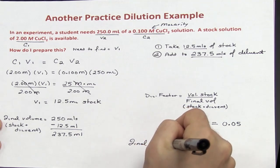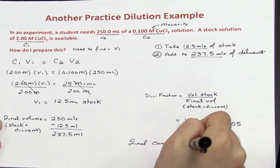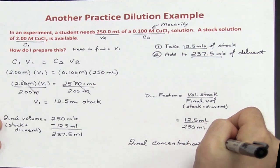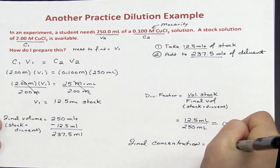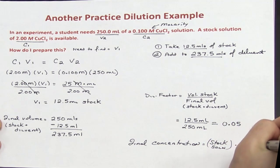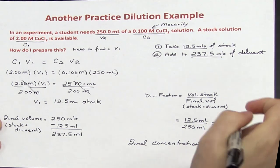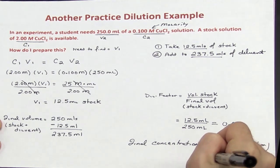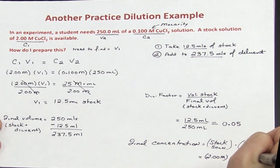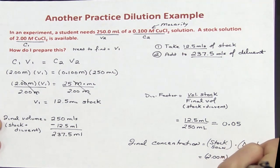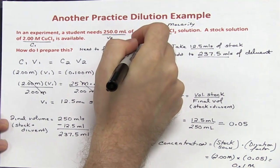To find the final concentration — just as we saw with serial dilutions — the final concentration equals the stock solution concentration multiplied by the dilution factor. My stock solution was 2 molar, and when I multiply that by 0.05, I get back 0.1 molar, exactly the concentration I was looking for.